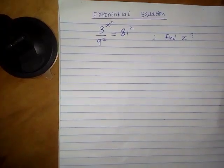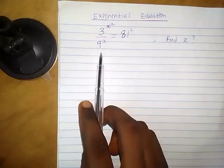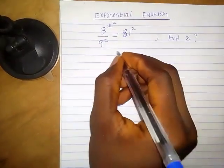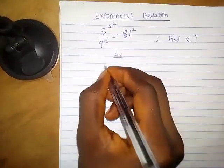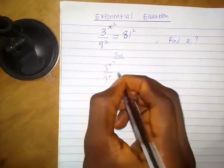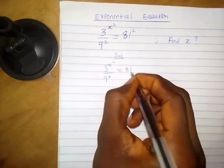Suppose we want to find the value of x of this exponential equation. How do we go about it? How do we find the value of x? We have 3 raised to the power x squared over 9 raised to the power x equals 81 squared.